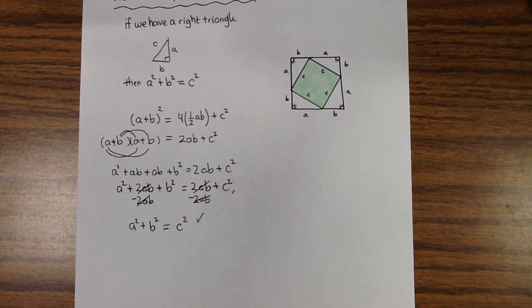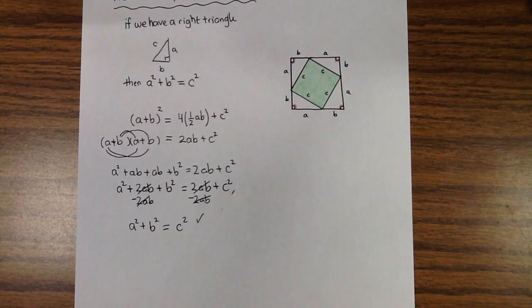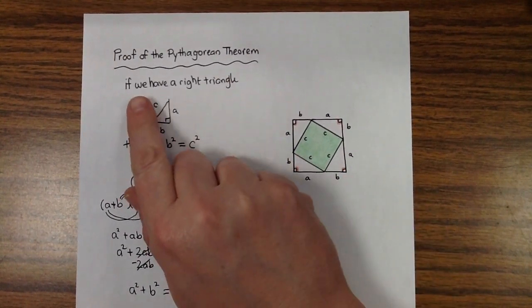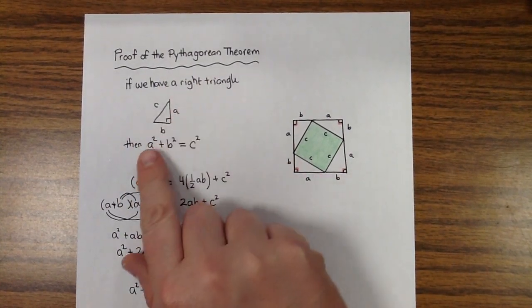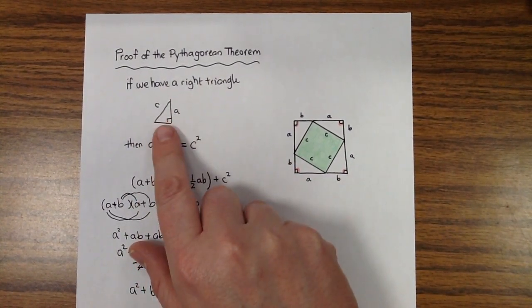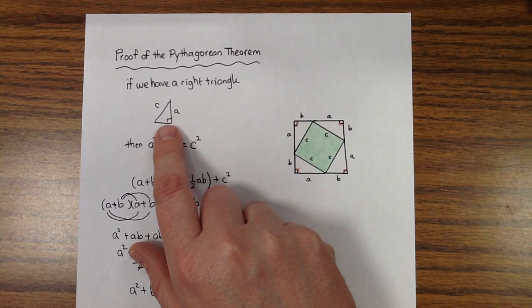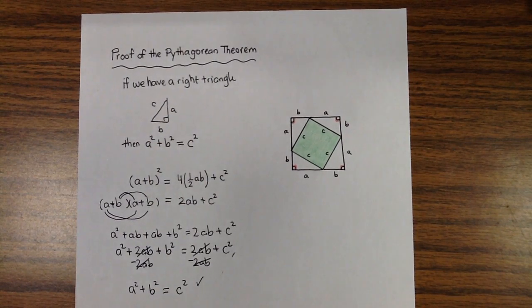And so this is one possible proof of many of the Pythagorean theorem. Just remember, the Pythagorean theorem only works on right triangles. So it doesn't work on any other type of triangle. It's got to be a right triangle for the Pythagorean theorem to work.